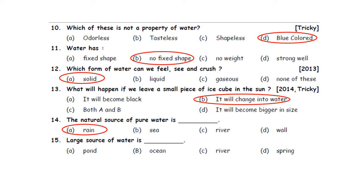Question fifteen: Large source of water is dash. A. Pond. B. Ocean. C. River. D. Spring. The large source of water is always the ocean. So the answer is option B.